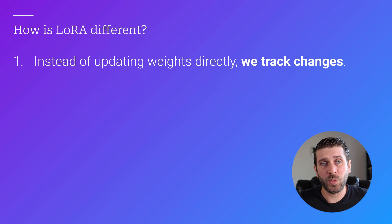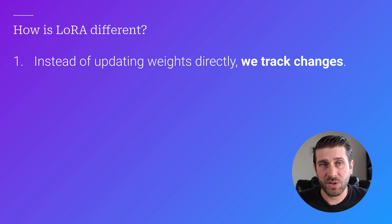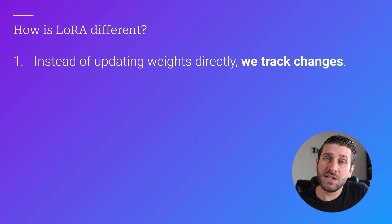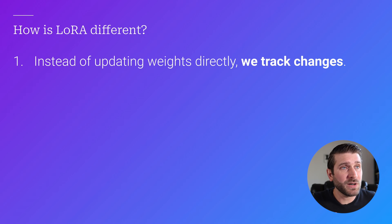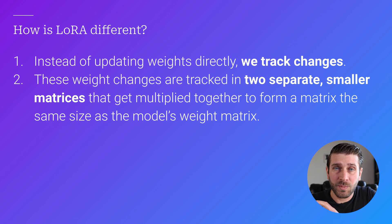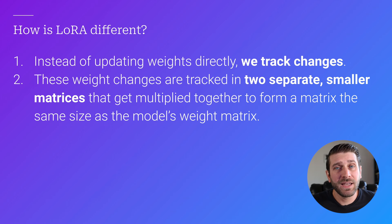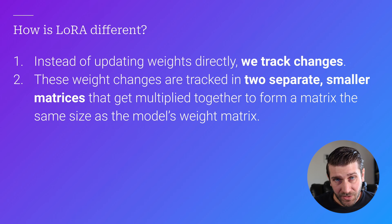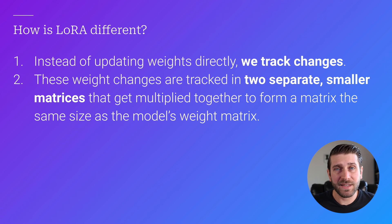First, instead of updating the weights of the model directly — like all 7 billion weights — we track the changes we want to make to those weights. You might ask: isn't that just adding more information to store in memory? Well, yes, but there's a huge benefit to doing this. This is where the core of LoRA kicks in: the changes you're tracking to your model weights are tracked in two smaller separate matrices that get multiplied together to form a matrix the size of the layer you're fine-tuning.